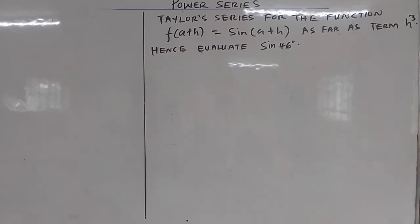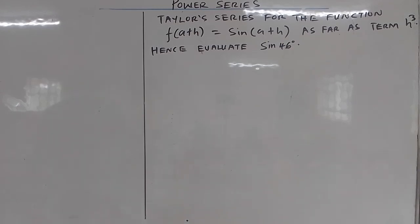Determine the Taylor series for the function f(a+h) = sin(a+h) as far as the term in h cubed, and use it to evaluate sin(46°) correct to 5 decimal places.